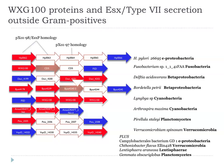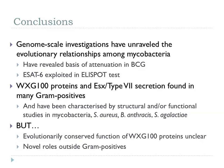To conclude on ESX systems: genome-scale investigations started it all when RD1 was found missing in BCG, exploited in the ELISPOT test for TB diagnosis. These systems have been found in many gram-positives with some structural and functional characterisation, but we still don't really know what they're doing. We are now finding them outside gram-positives in gram-negative organisms too, so the mystery continues and the next few years should bring interesting observations and deeper understanding.